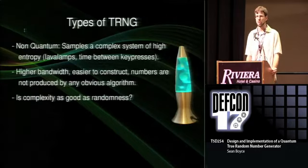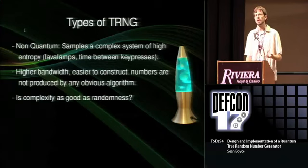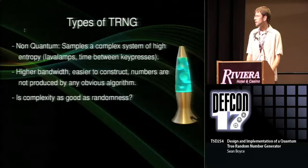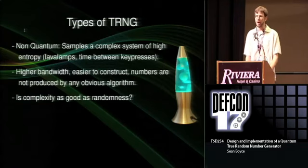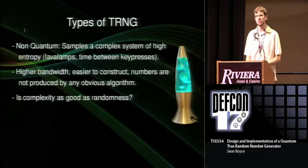Among true random number generators, there are two sorts. Non-quantum TRNGs sample a complex and chaotic system — I use chaos and entropy interchangeably — and use that measured entropy to generate random numbers. These are not that hard to design if you think very carefully. For instance, you can use minor differences in user input timing, or sample air pressure or temperature over very small time scales. But fundamentally, you're sampling a system with many inputs, and you have to ask whether the complexity of the output is as good as truly random output, since it's very difficult to prove what all the inputs are, or whether some of them are defined by an algorithm or biased.